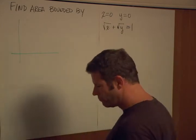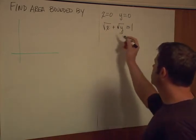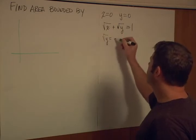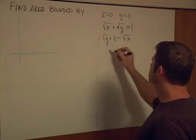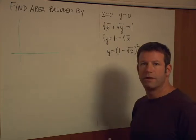Let's solve this for y. We can say this implies that square root of y is one minus square root of x, or y is one minus the square root of x, the quantity squared.